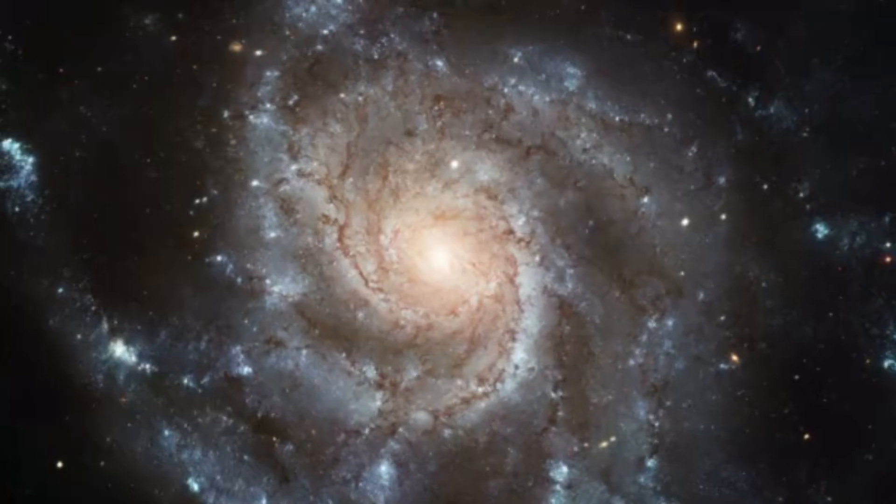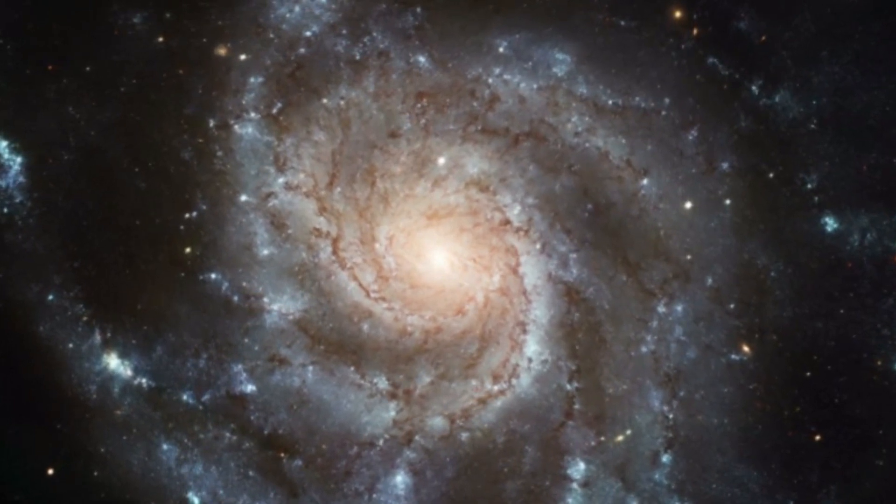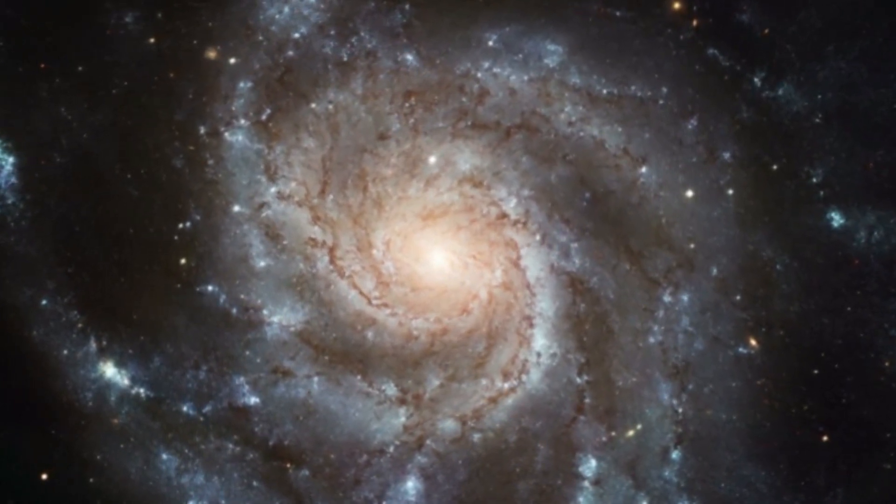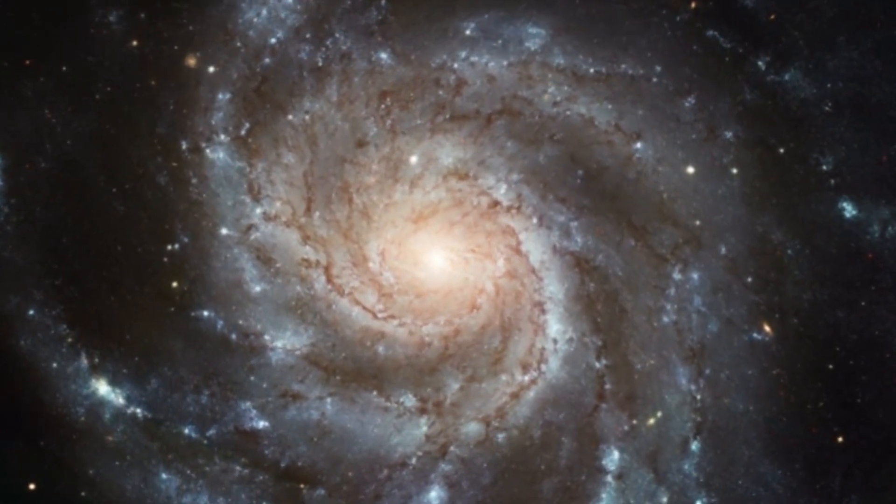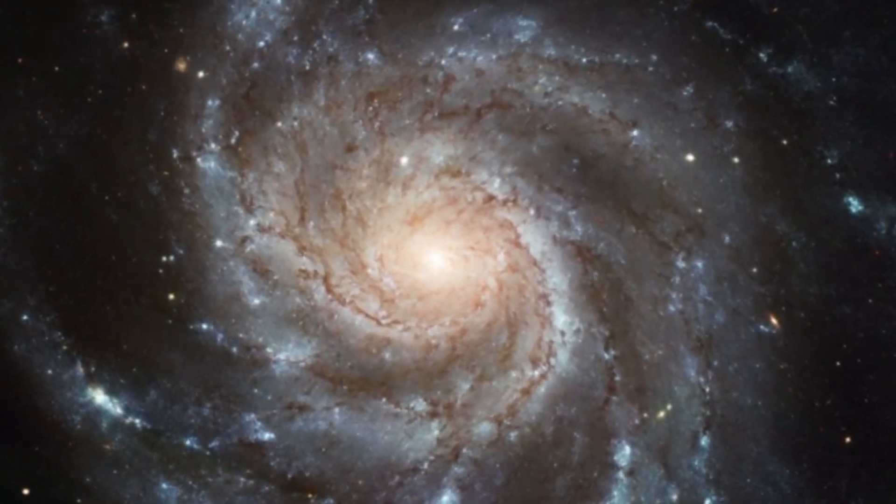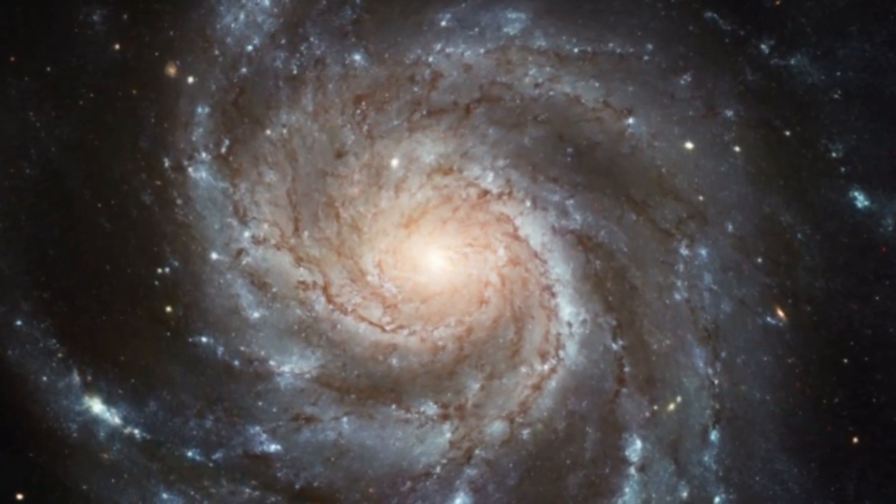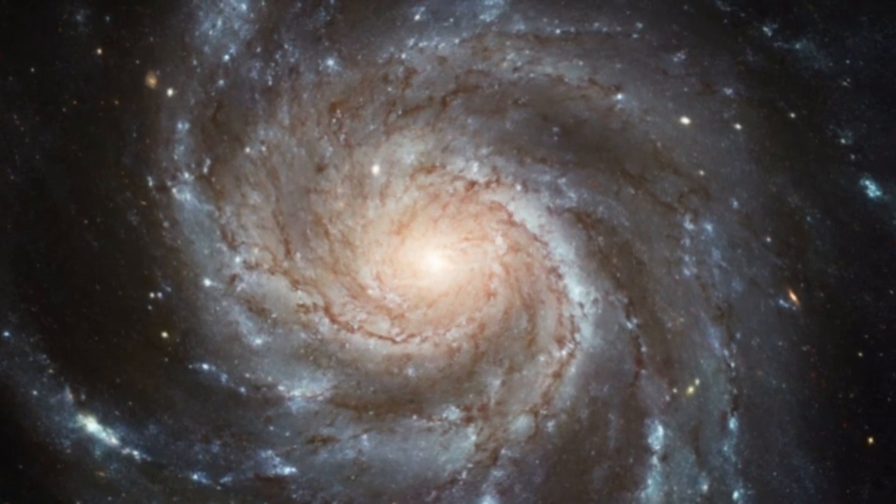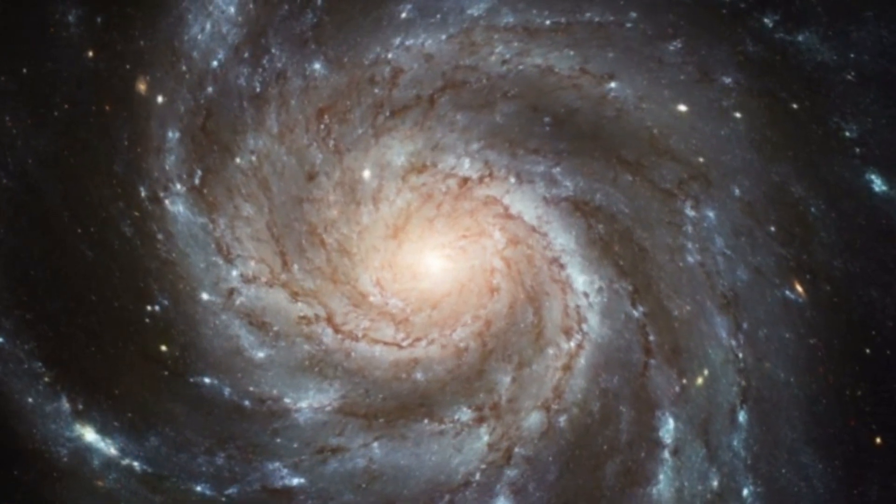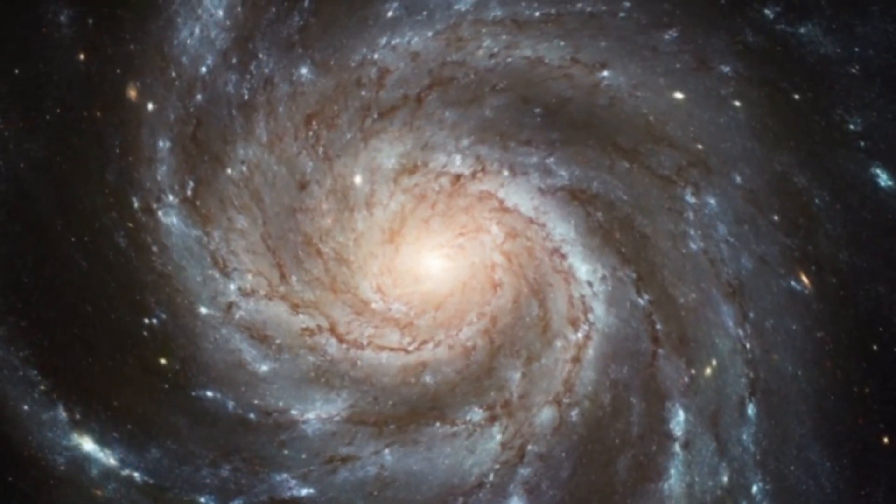The largest galaxies are giant ellipticals. They look like eggs or footballs. They can be 10 times the Milky Way's size and contain more than a trillion stars. Such galaxies probably formed when two or more spirals, like the Milky Way, merged to form a single galaxy.